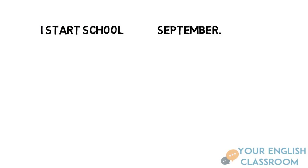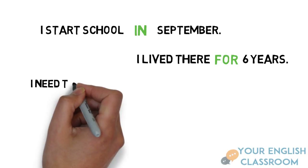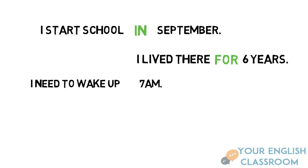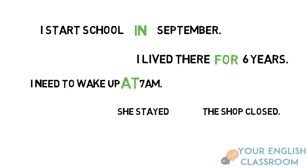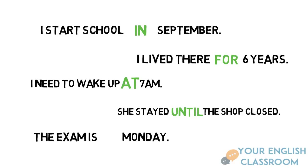Now we've got an exercise, so pay attention. 'I start school ___ September' — that's 'in,' well done. 'I lived there ___ six years' — that's 'for.' Next: a specific time in the day, 7 a.m. — that's 'at.' 'She stayed until the shop closed' — 'until,' a continuous event ending at a specific time. And the last one: 'The exam is ___ Monday' — days and dates, so that's 'on.' Excellent!